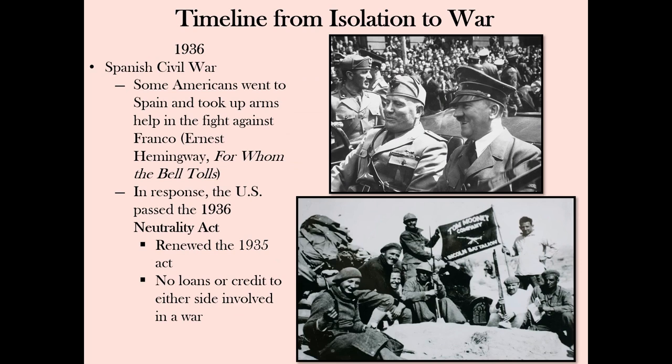When forces led by Francisco Franco challenged the Spanish government in 1936, Hitler and Mussolini provided aid. The Spanish Civil War served as a training ground for Hitler's growing military. Some 3,000 Americans, known as the Abraham Lincoln Brigade, went to Spain to fight against Franco's fascist forces. Ernest Hemingway was there as a correspondent; his 1940 novel For Whom the Bell Tolls is set during the war. Congress passed the Neutrality Act of 1936, renewing the 1935 Act and prohibiting the United States from loaning money or providing credit to nations at war. The League of Nations, as you guessed, did nothing.